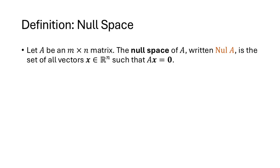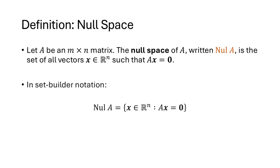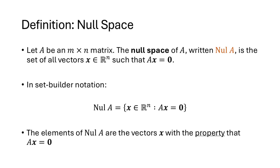So what's the null space of a matrix? If we have an m by n matrix A, the null space — written nul A — is the set of all vectors x in R^n with the property that A times x equals zero. We can write this in set builder notation, and as you can see here, this is a property description, because the vectors in the null space of A are those that have the property that A times x equals zero.